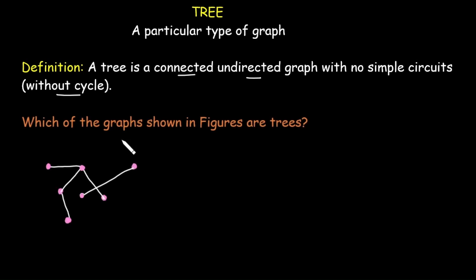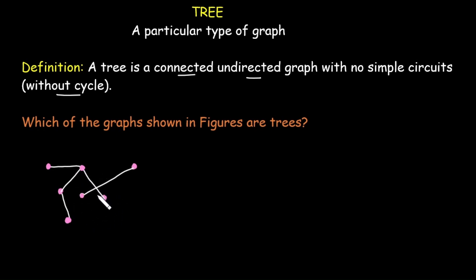Let's look at a few examples to identify which graphs are trees. The first graph: is it undirected? Yes. Is it connected? No, because we cannot reach this point from here. Since it is not connected, this graph is not a tree.